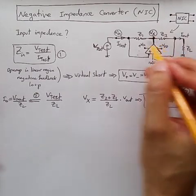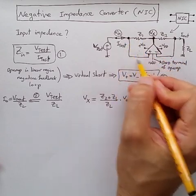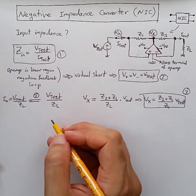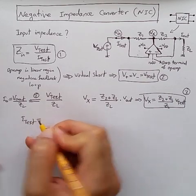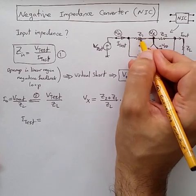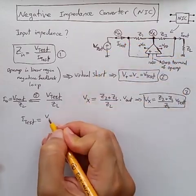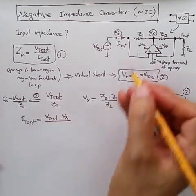Now that we know V-x, we can easily find I-test, which is the current flowing through Z-1, because no current can go through positive terminal, because input impedance of ideal op-amp is infinite. So we can say I-test is just the voltage across Z-1 divided by Z-1. So it is V-n, which is V-test, minus V-x, divided by Z-1.